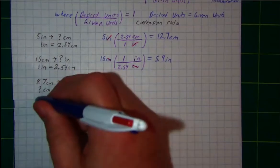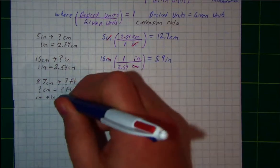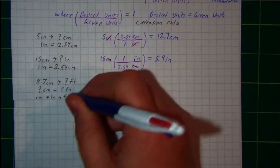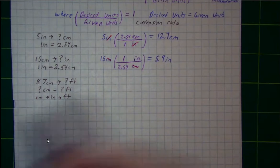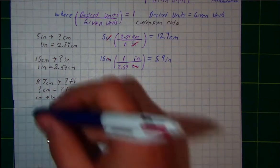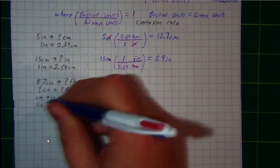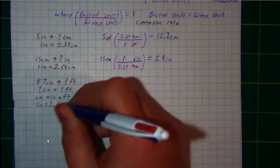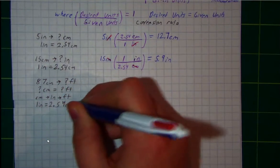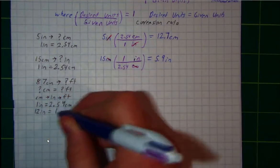So I'm going to go from centimeters to inches, and then inches to feet. What I can do is apply dimensional analysis twice. I'm going to use the fact that 1 inch equals 2.54 centimeters, and also that 12 inches equals 1 foot.